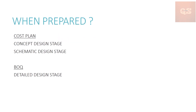Let's understand when both these are prepared. A cost plan is prepared during the initial stages of a project — that is the concept design stage or schematic design stage. During these stages there will not be much documents or drawings available; mostly some reports and master plans are available. From these, as a cost manager or QS, you have to prepare the cost plan to arrive at the budget of the project.